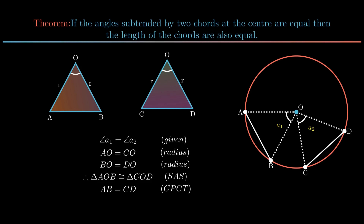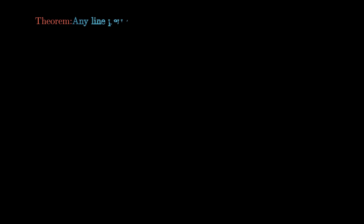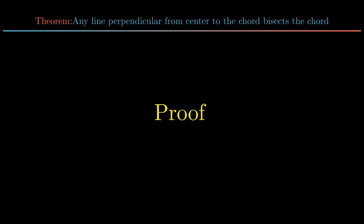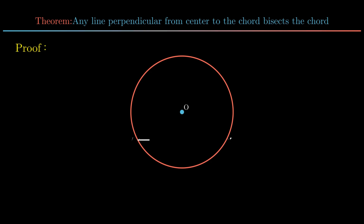Moving on to the next theorem: any perpendicular line from the center to a chord bisects the chord. Consider a circle with center O. Let AB be the chord and ON be the perpendicular on it, making angles ONA and ONB each 90 degrees.